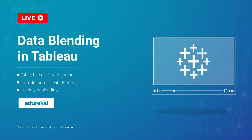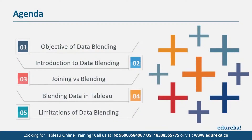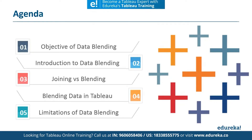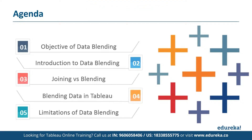But before we begin, let's discuss our agenda for today. First, we're going to talk about the objective of data blending. Then we're going to talk about what data blending essentially is and how it works in Tableau. Then we're going to discuss a concept called joining and see how it is different from data blending. Then we're going to see how you can do this — a very short demo with a few simple steps. And finally, we're going to discuss a few limitations in this process. So without much ado, let's get straight to the module.